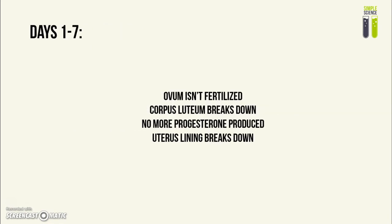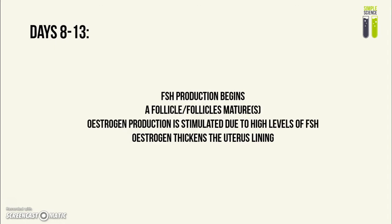Now let's look at the menstrual cycle itself. From days 1 to 7, if the ovum isn't fertilized, the corpus luteum will begin breaking down, which means no more progesterone will be produced and secreted. This causes the uterus lining to break down, because progesterone maintains the uterus lining.